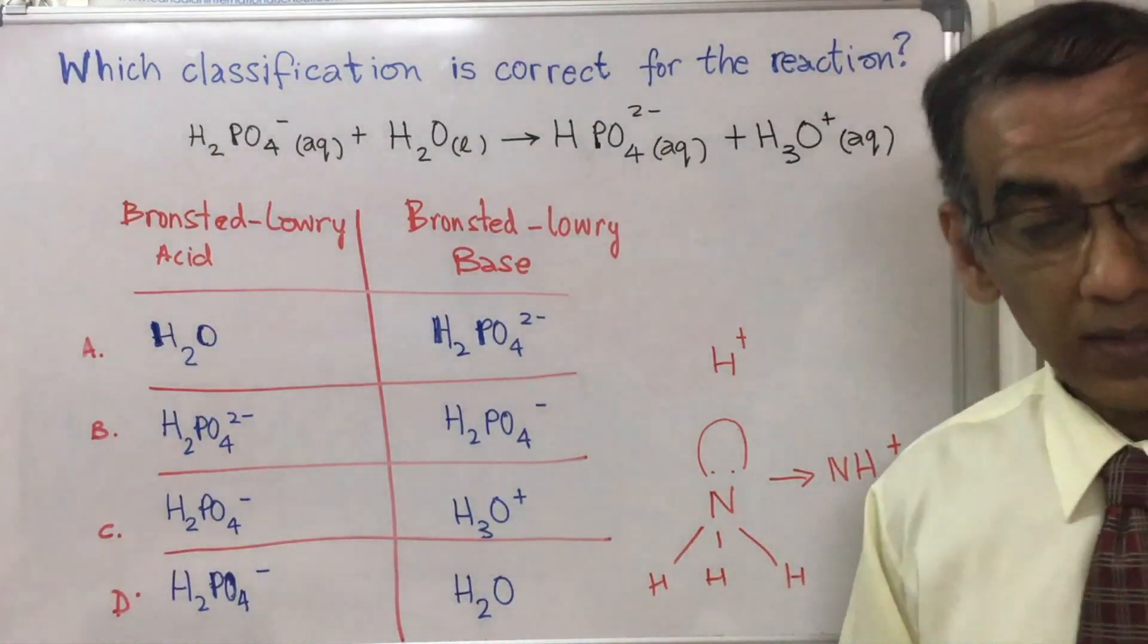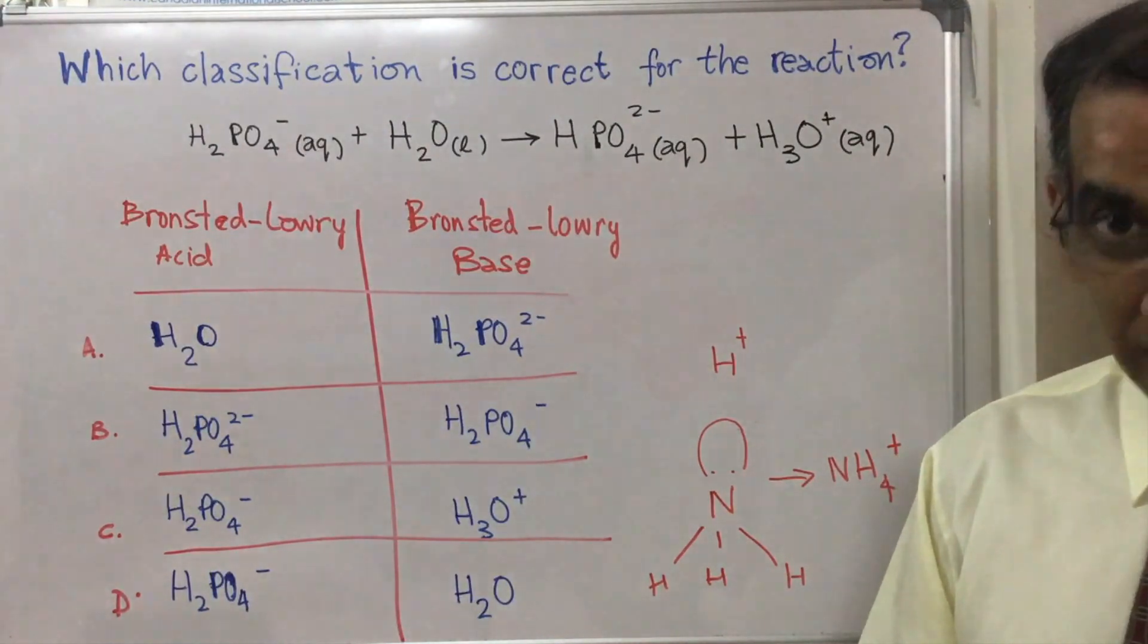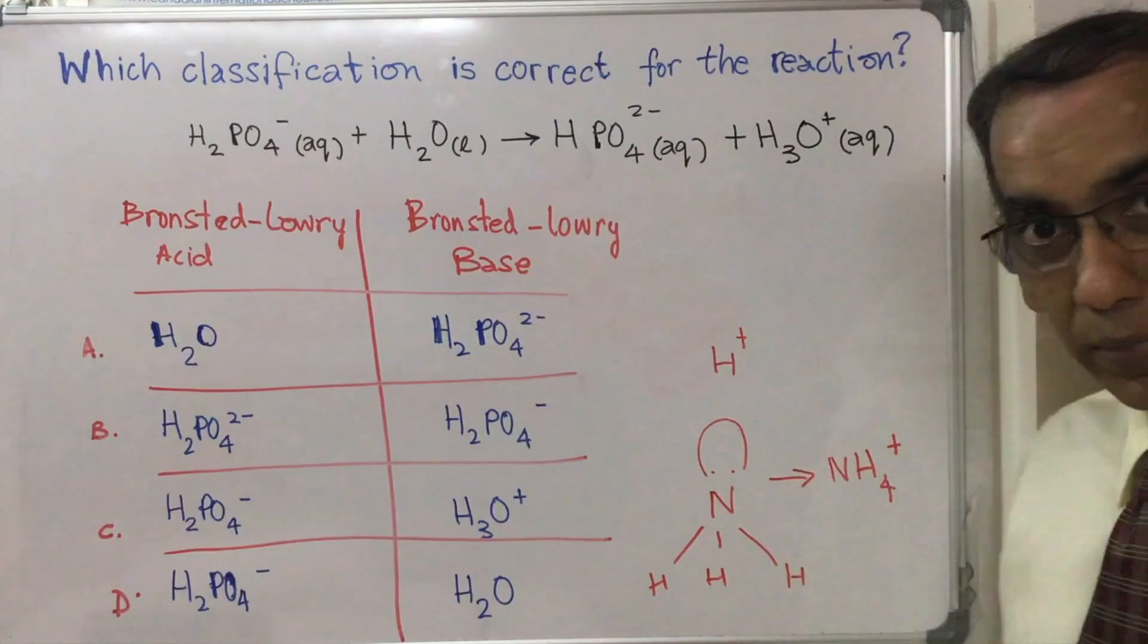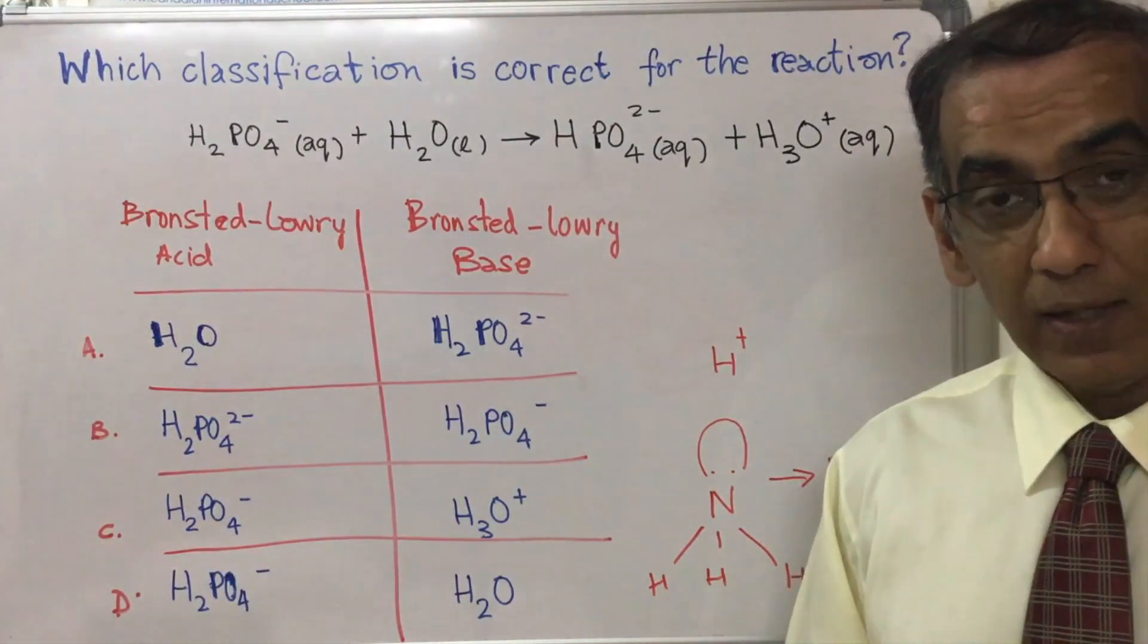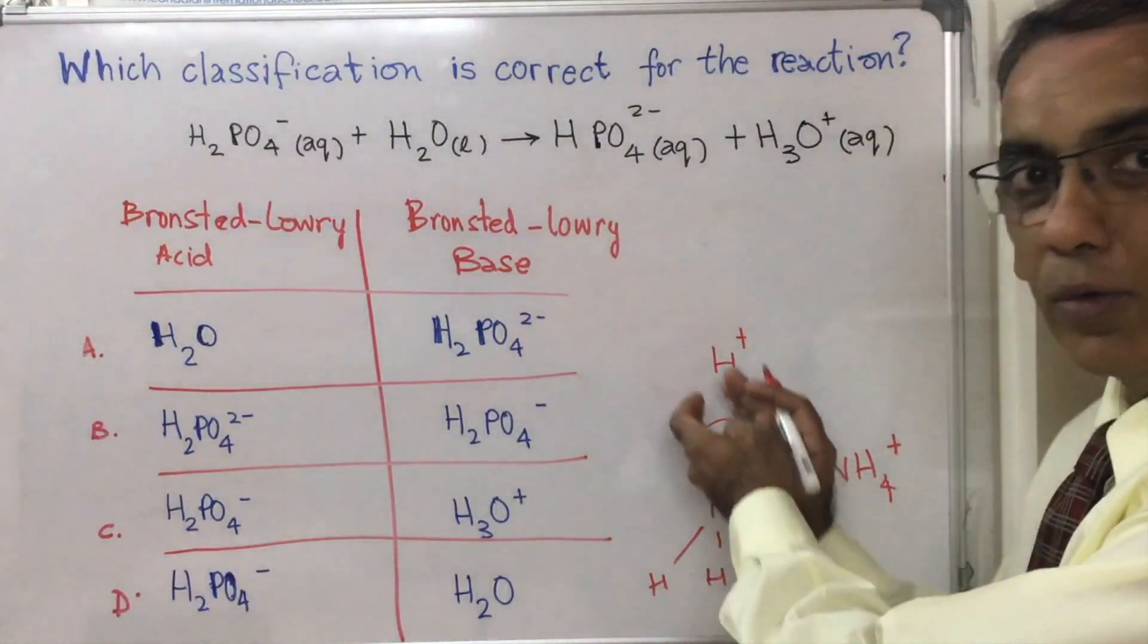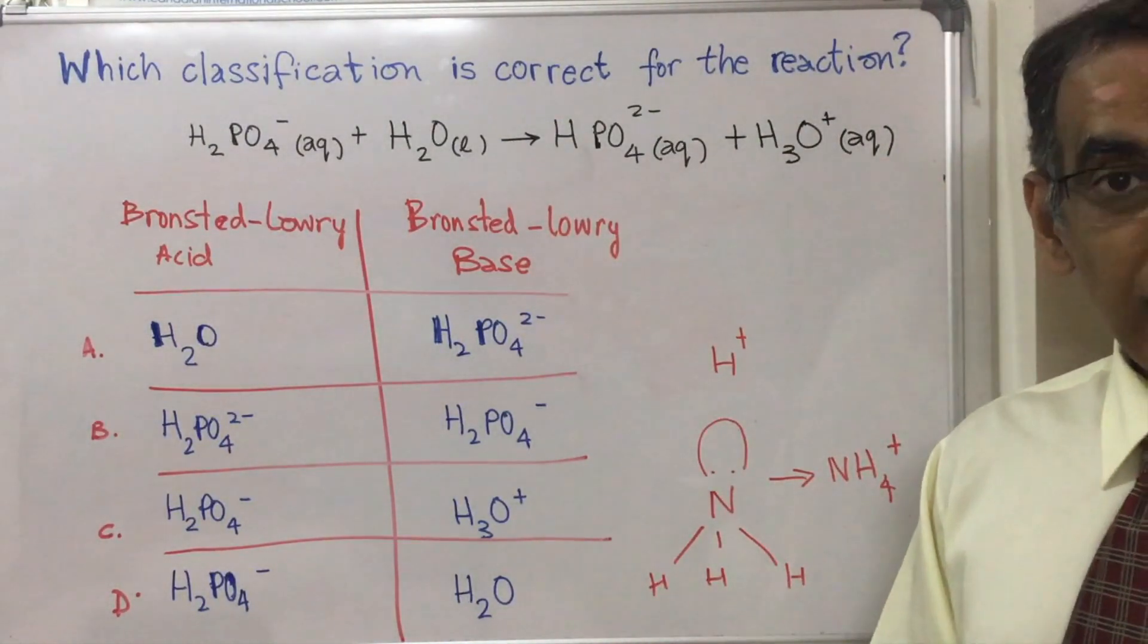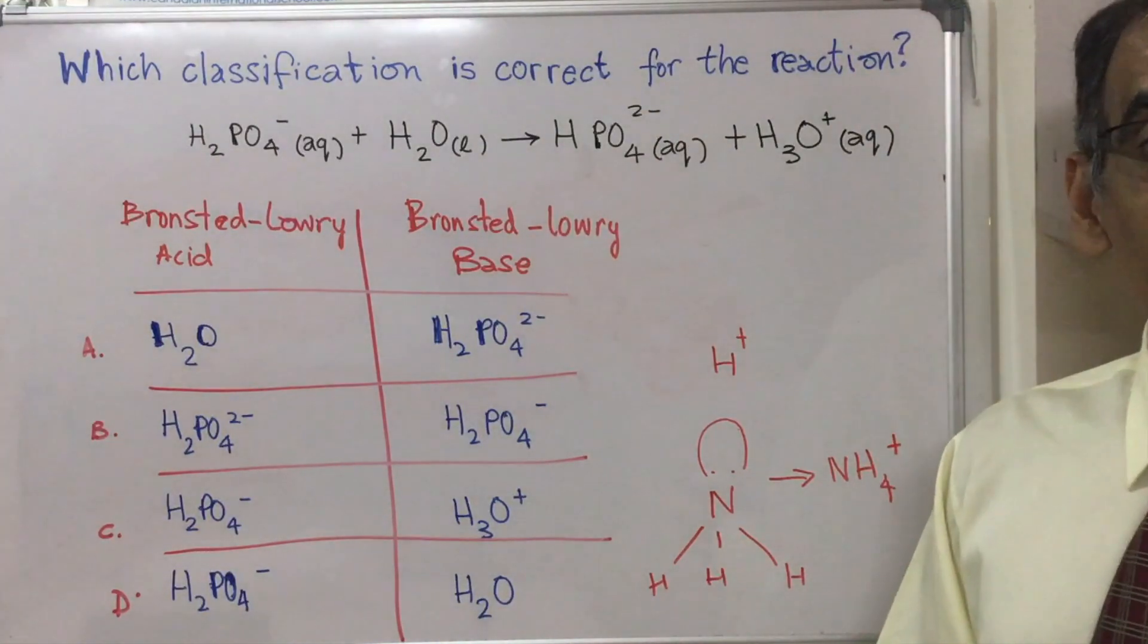When ammonia does this it behaves both as a Bronsted-Lowry base because it's accepting a proton, but it also behaves as a Lewis base because it offers its lone pair to accept another species, and that is what would make it a Lewis base.